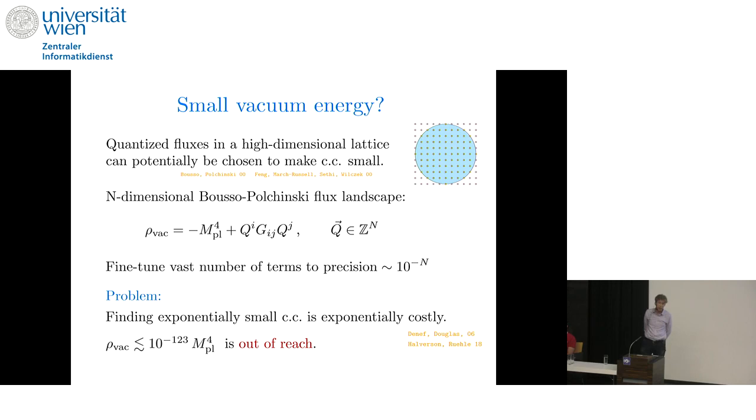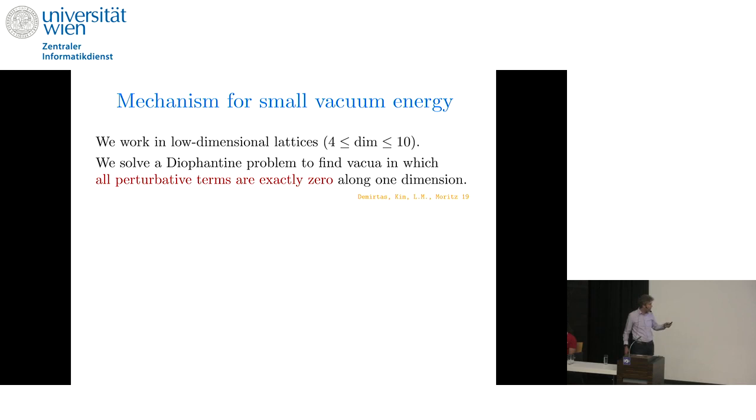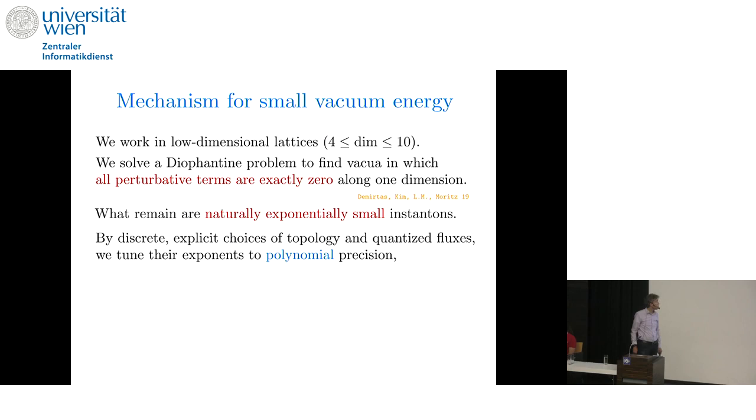The problem with this approach is that achieving an exponential hierarchy is exponentially costly. And it seems that the kinds of hierarchies we see in nature are just out of reach. So we're going to work with a mechanism. We introduce a mechanism for getting small vacuum energy that doesn't require us to work in a high-dimensional lattice. We're going to work in low-dimensional lattices limited by our computational ability up to about dimension 10. And there we will solve a Diophantine problem to find vacua in which all the perturbative terms are exactly zero along one dimension in the moduli space. Well, when all the perturbative terms are gone, what remain are non-perturbative terms, instantons, and these are naturally exponentially small.